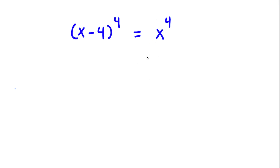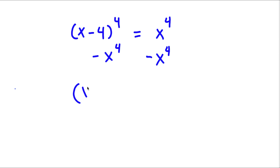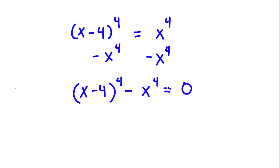The first thing I'm going to do is subtract x to the power of 4 on both sides. So now I have (x minus 4) to the power of 4 minus x to the power of 4 is equal to 0.